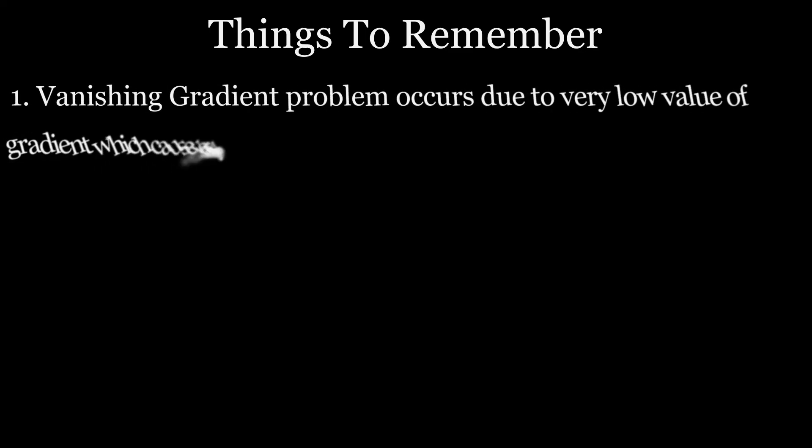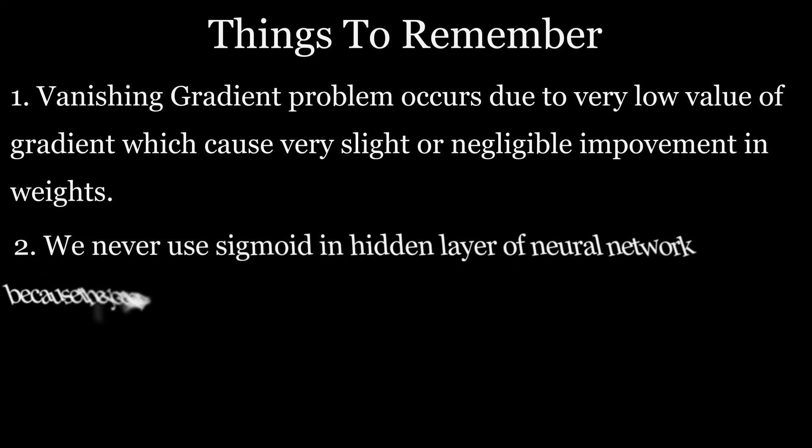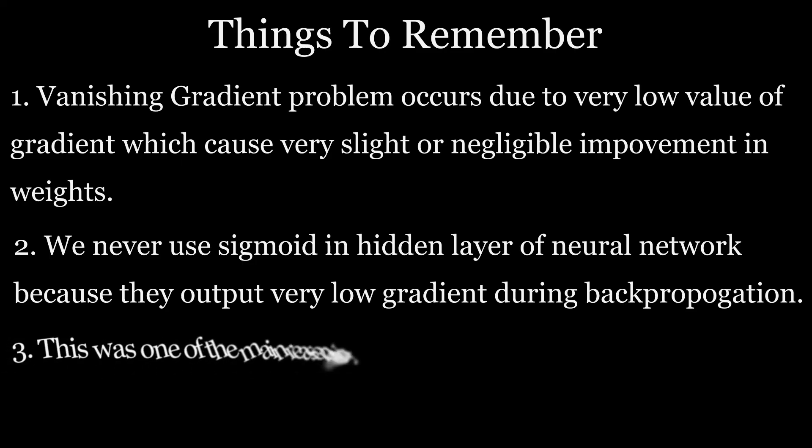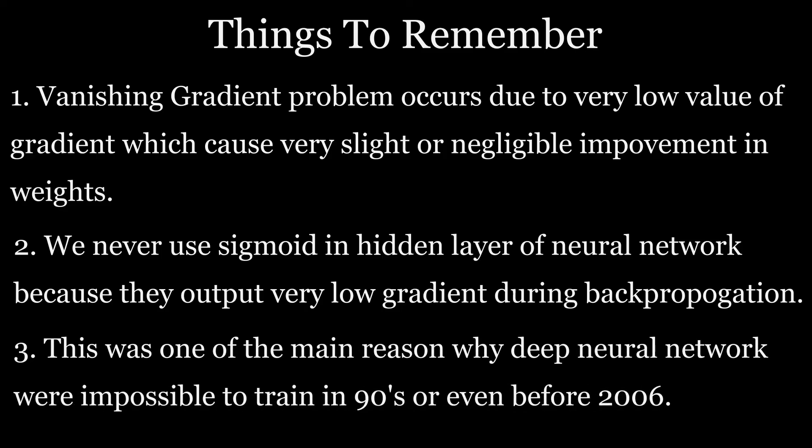So three things to remember from this video. Vanishing gradient problem occurs due to very low values of gradient which cause very slight or negligible improvement in weights. We never use sigmoid in hidden layers of neural networks because they output very low gradients during backpropagation. This was one of the main reasons why deep neural networks were impossible to train in the 90s or even before 2006.